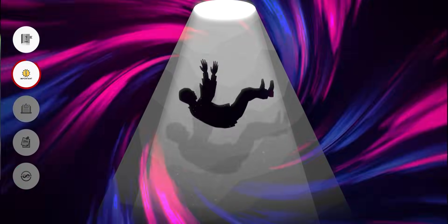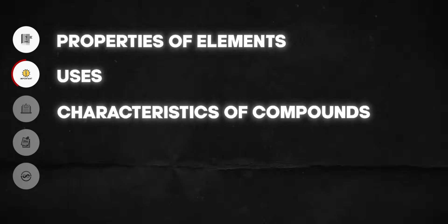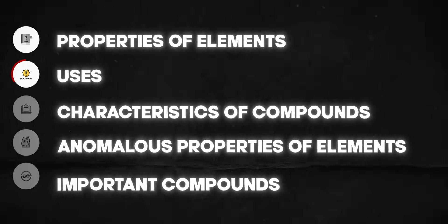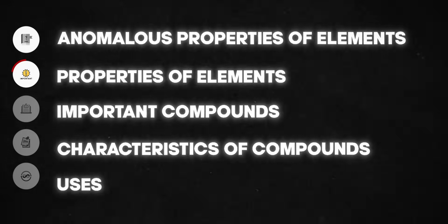Students have a huge misconception about inorganic chemistry — they feel it's just about remembering things, and that's where they fall into this loop. You do have to remember a couple of things, but not a lot. In fact, everything in inorganic chemistry, including the exceptions, can be understood if you get the logic behind it. The most important concepts to focus on are: properties of elements, uses, characteristics of compounds, anomalous properties of elements, and important compounds. Anomalous properties and trends are most important, followed by important compounds, then uses — these cover around 70% of exam questions.